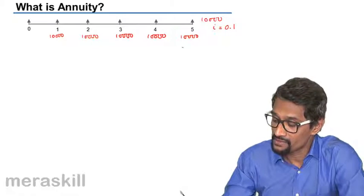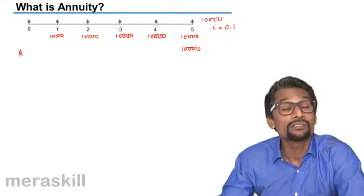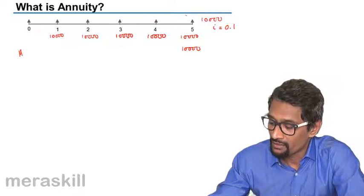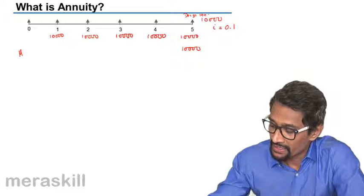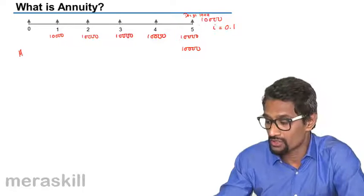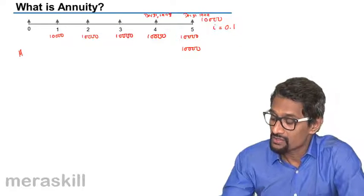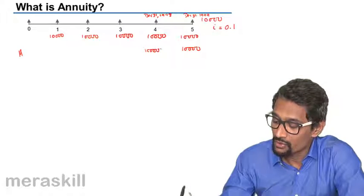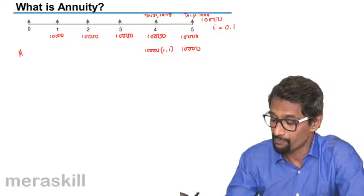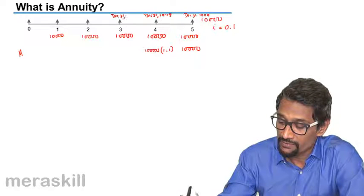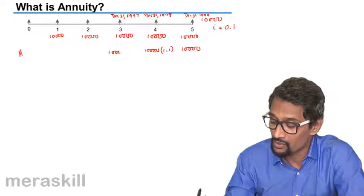Now, the amount you deposit at the end of five years will remain as it is — ten thousand — because it is not going to accrue interest. Suppose you deposit on December 31st 1999 and withdraw on the same day, it does not accrue. However, the deposit made on December 31st 1998 would accrue one year's interest, so it becomes ten thousand into 1.1.